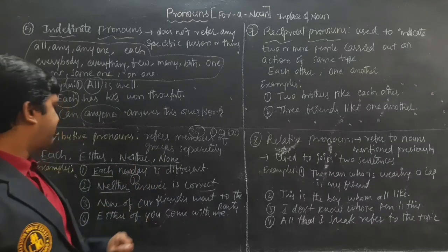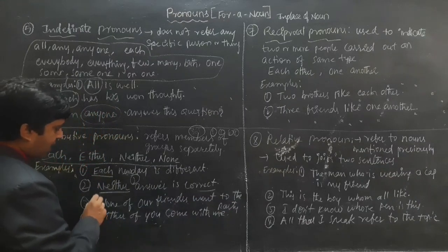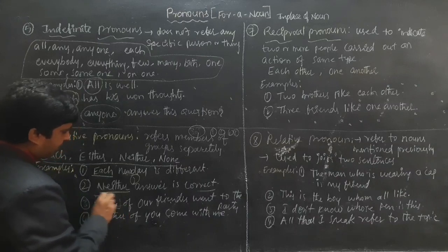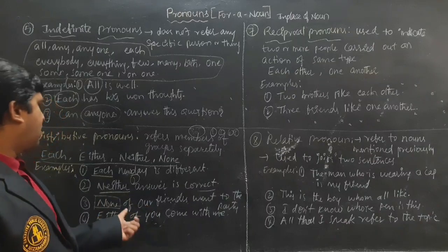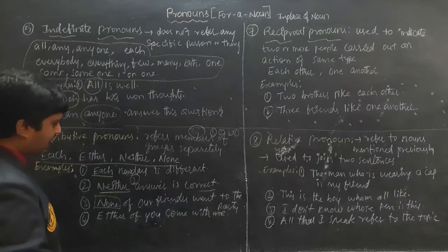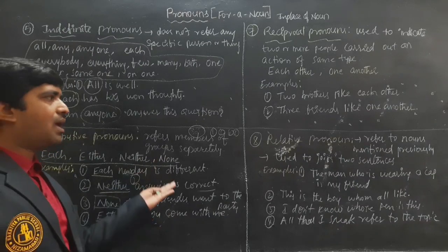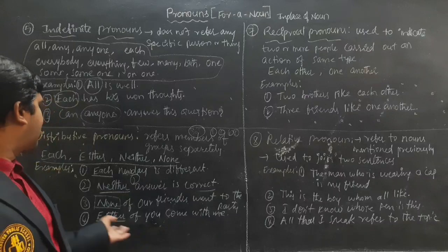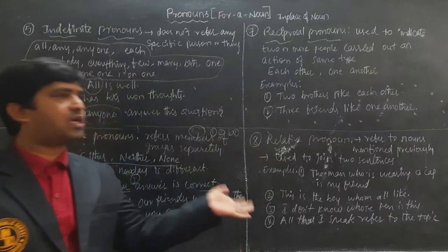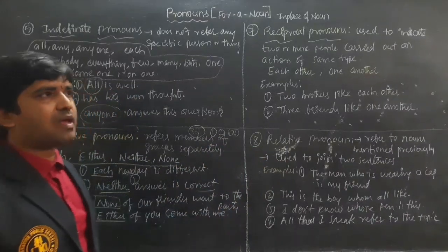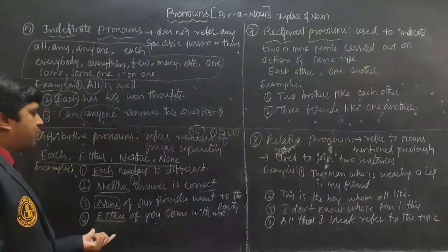'None of our friends went to the party' — none means no one from many. You have a number of friends but none went. 'Either of you come with me' — maybe this person, that person — we are not specifically mentioning. In this way we use Distributive Pronouns.